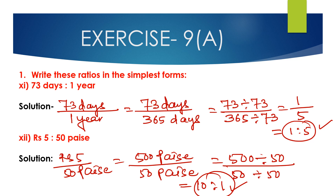So when we convert ratios into the simplest form, first find out the common factor. After finding the common factor, divide the antecedent and the consequent both by the common factor, and the ratio we get is the simplest form of the given ratio.